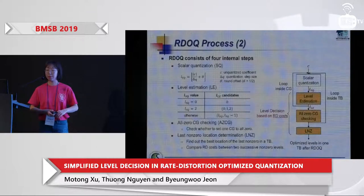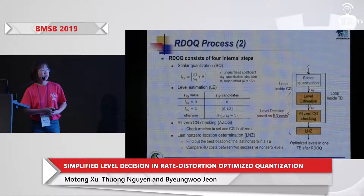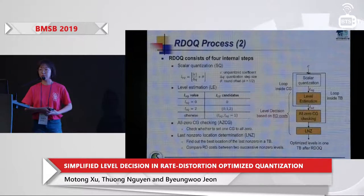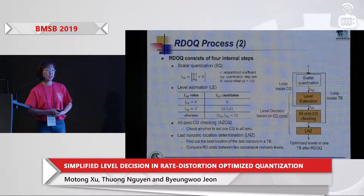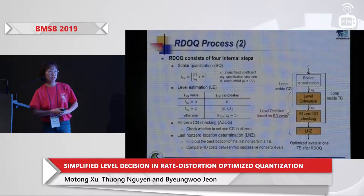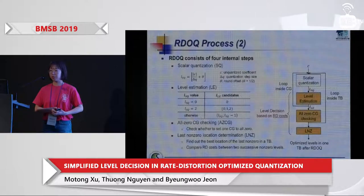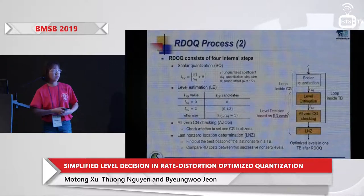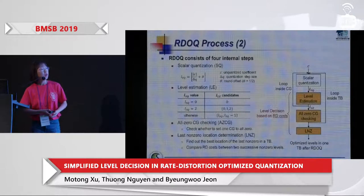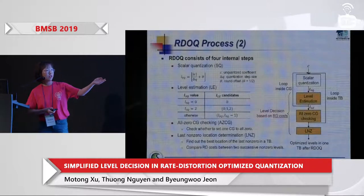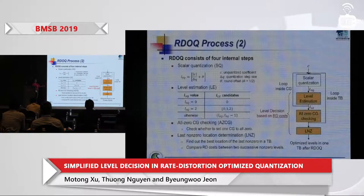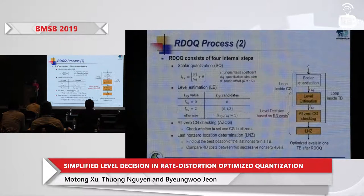The flowchart of this RDOQ process shows that after all steps we get optimized levels inside one transform block. The three yellow-colored steps — level estimation, all-zero CG checking, and LNZ — all make level decisions based on RD cost.